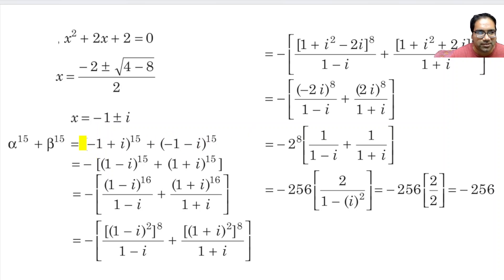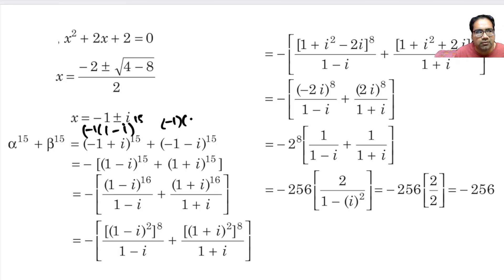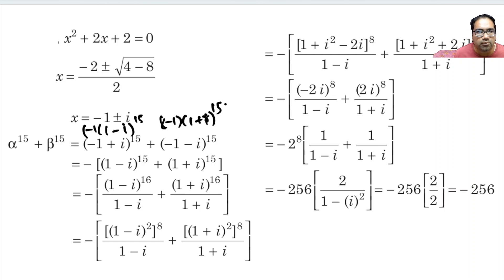Let us take minus 1 common in both places. The first part becomes minus 1 into (1 - i), whole power 15. The second part becomes minus 1 into (1 + i), whole power 15. Taking minus 1 common from both, we get minus 1 whole power 15, which equals minus 1, multiplied by (1 - i) whole power 15 plus (1 + i) whole power 15.